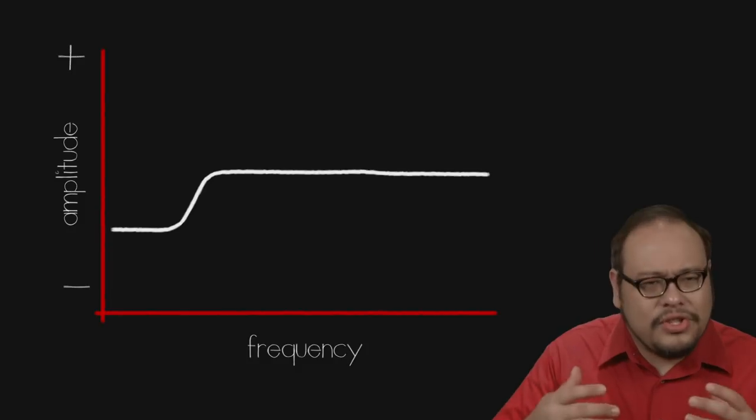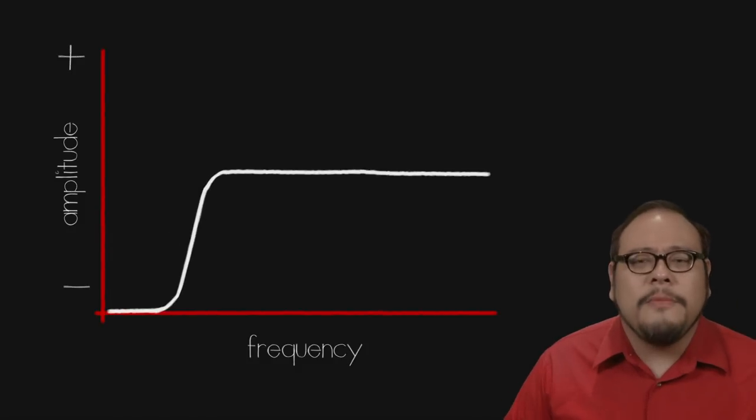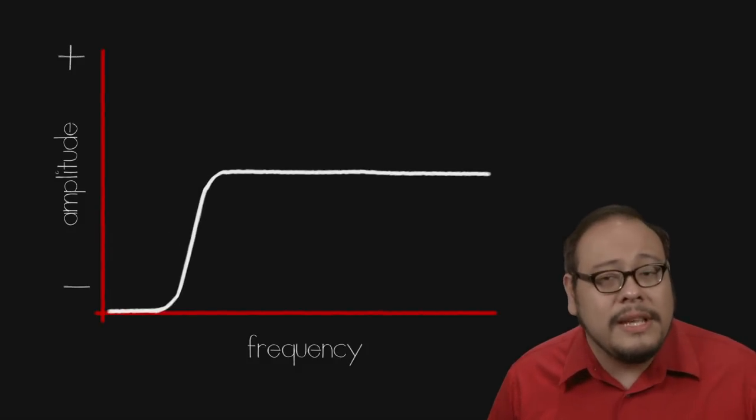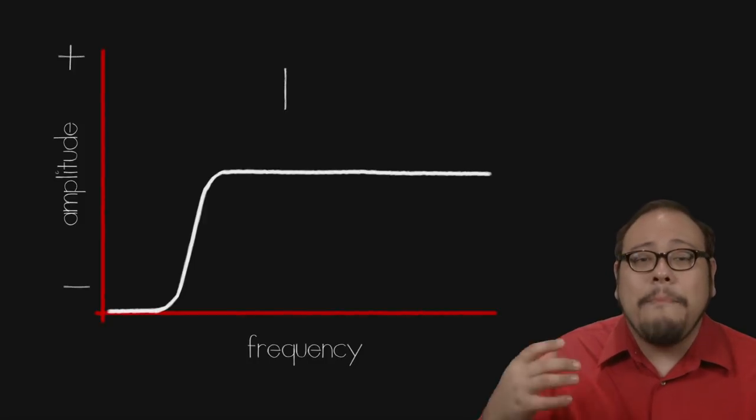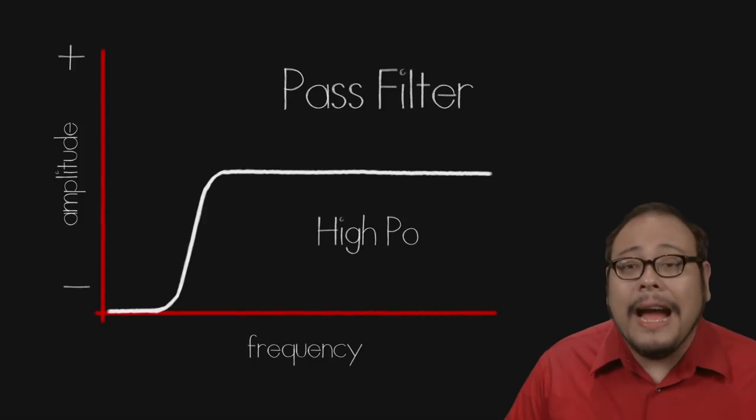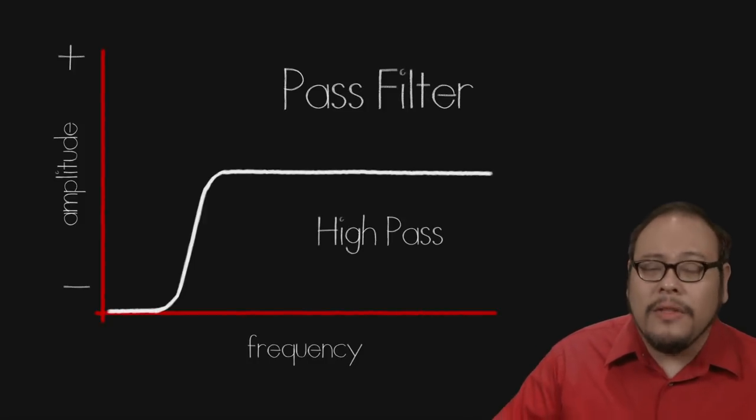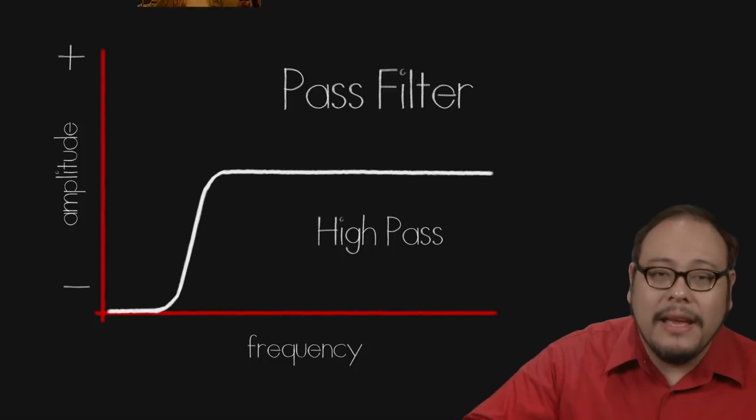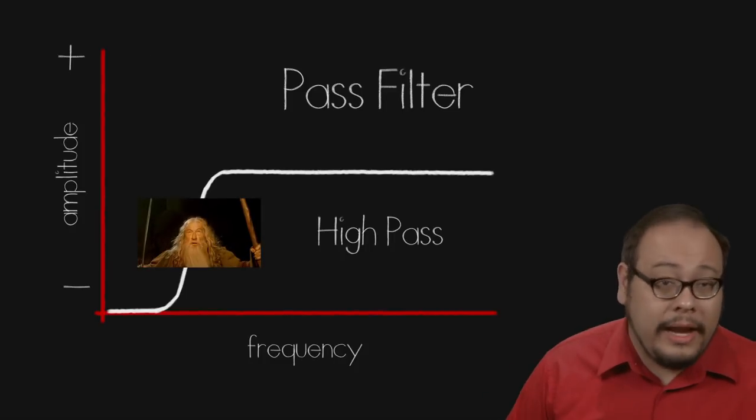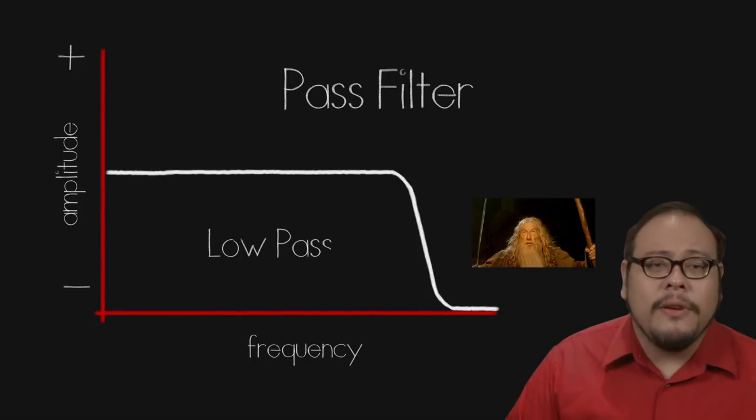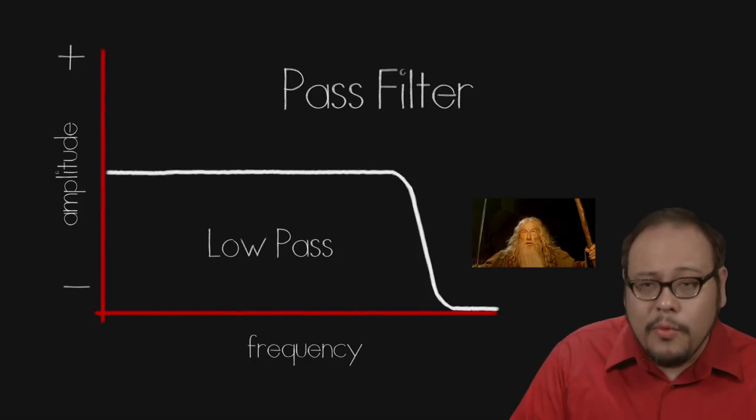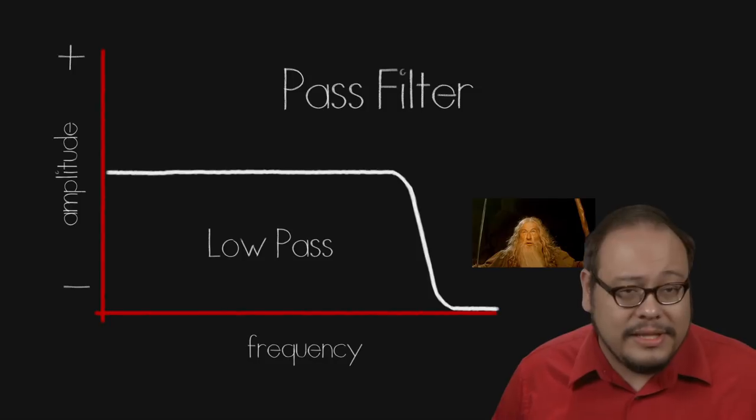If we go into the extreme and eliminate all the sounds from above or below a certain frequencies, this shelf is now called a pass filter. A high pass filter essentially lets all the high frequencies pass, eliminating all the low range. Whereas a low pass filter does the opposite, lets all the low range pass and killing off all the high frequencies.